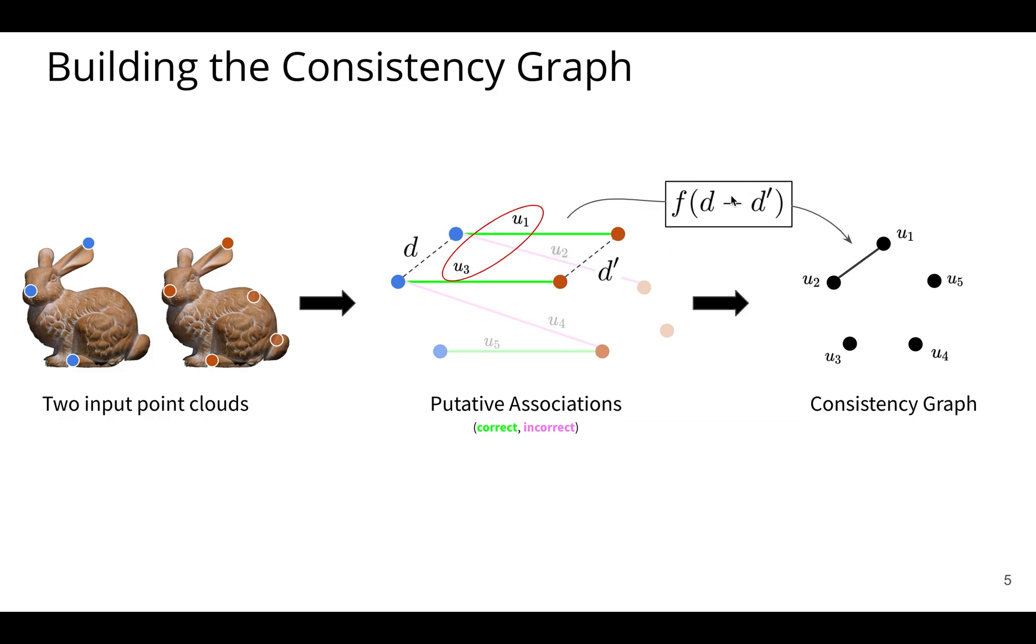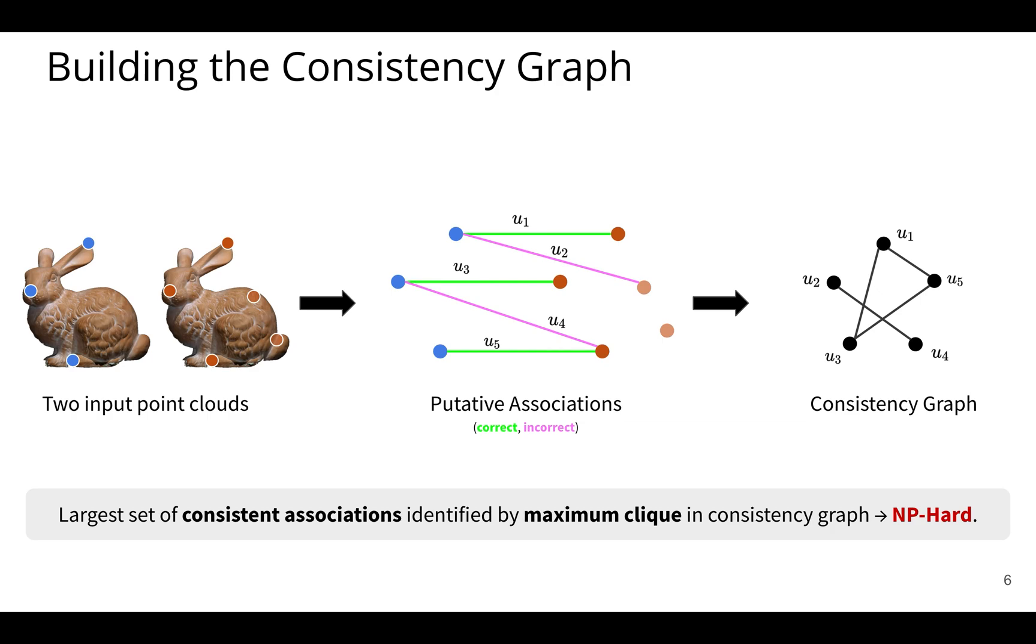And the way we scored is through this function f, whose range is between zero and one. You can use any sort of function you'd like. In this case, we use a Gaussian kernel to give us that score. So we do this for each pair of associations. We build up this graph, which now looks like this, and it becomes a little bit more clear that to pick the consistent associations, the largest set of consistent associations, we can use the maximum clique.